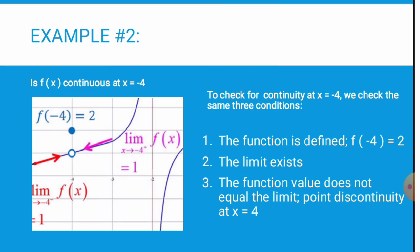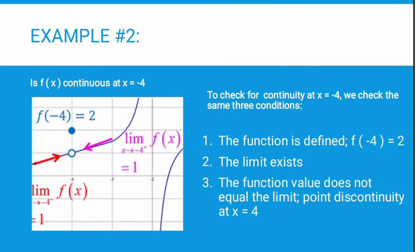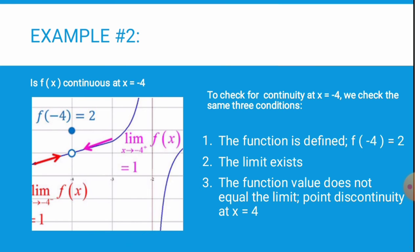Example number two: is f(x) continuous at x equals negative four? We need to check the same three conditions. First, the function is defined — f(negative four) equals 2. Second, the limit exists as shown in the graph. Third, however, the function value does not equal the limit, which breaks the continuity at x equals negative four.